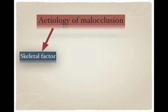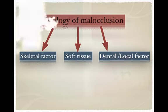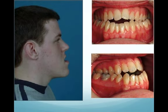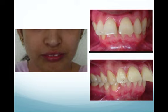As covered in the previous two lectures, the etiology of malocclusion can be skeletal, soft tissue, or — the topic of today and next week — dental or local factors. For example, this patient has a Class 3 incisor relationship, and looking closely at his extraoral photograph you can see he has a prognathic mandible, a Class 3 skeletal pattern, that results in this malocclusion. So here the etiology is skeletal.